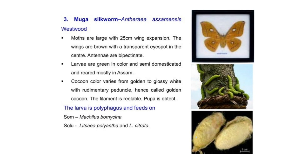Another non-mulberry silkworm is the mooga silkworm. Its scientific name is Antheraea assamensis. The moths are large with 25 centimeter wing expansion. The wings are brown with a transparent eye-spot in the center. They also possess bipectinate antennae.